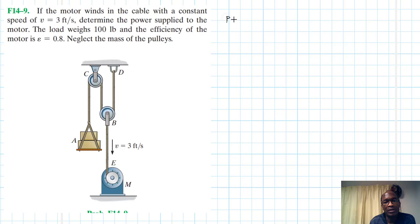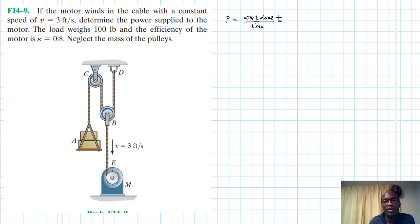We know that power is equal to the work done divided by the time taken, which is just the rate at which energy is released to the object of interest. Work done is force times displacement times cosine of the angle between the force and displacement vector, divided by time. Since displacement over time gives us speed, this just becomes F cosine theta times velocity.